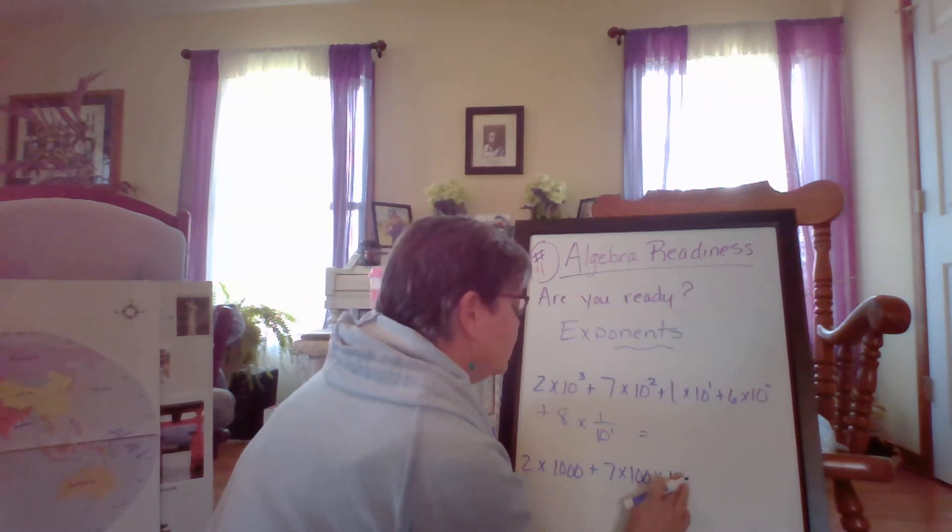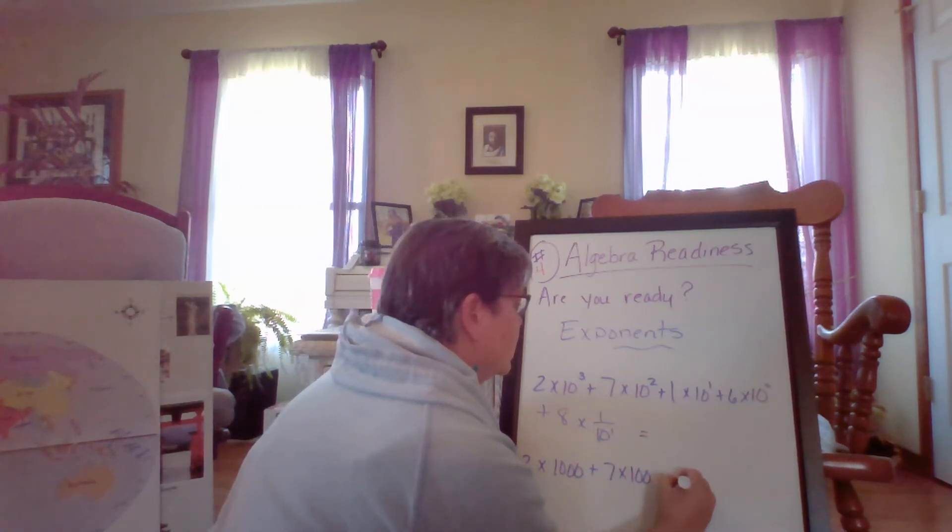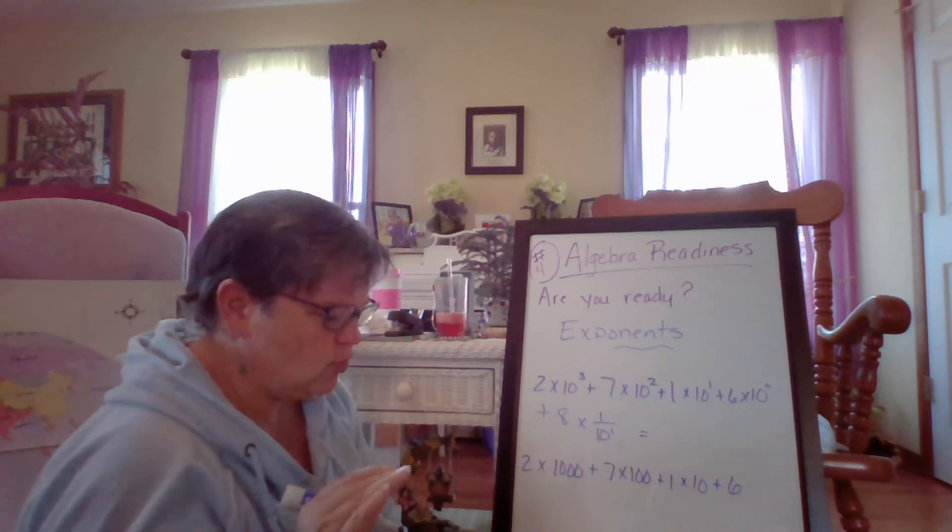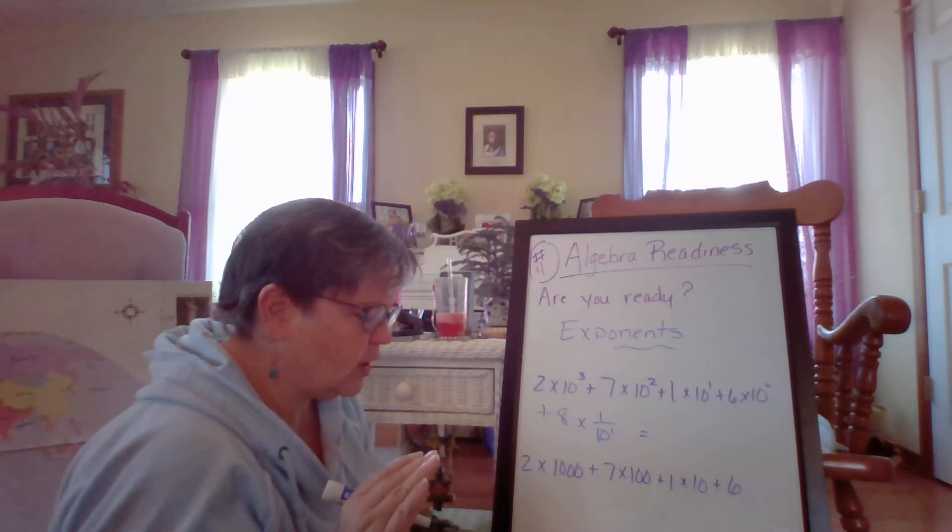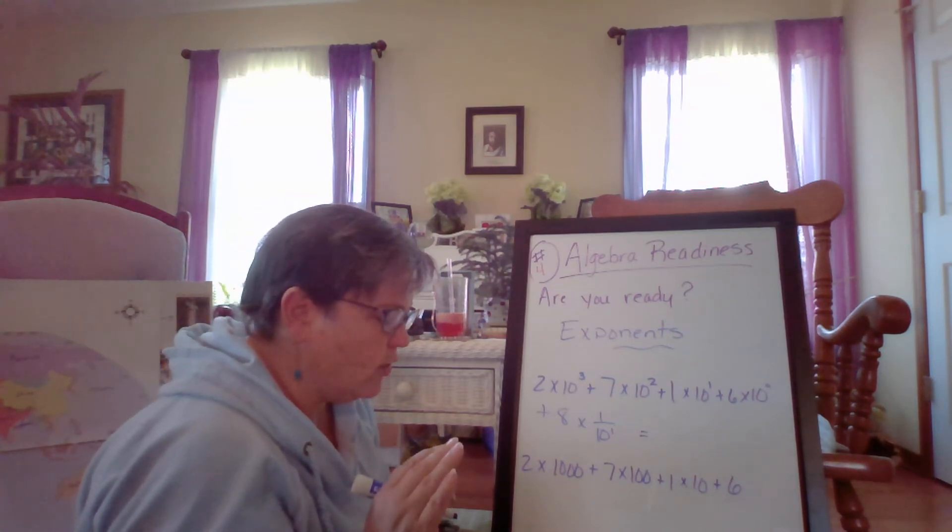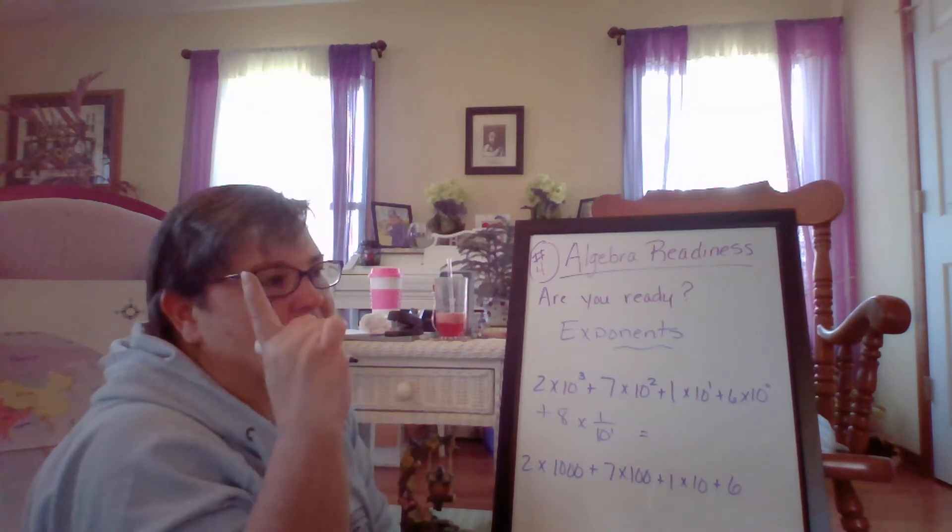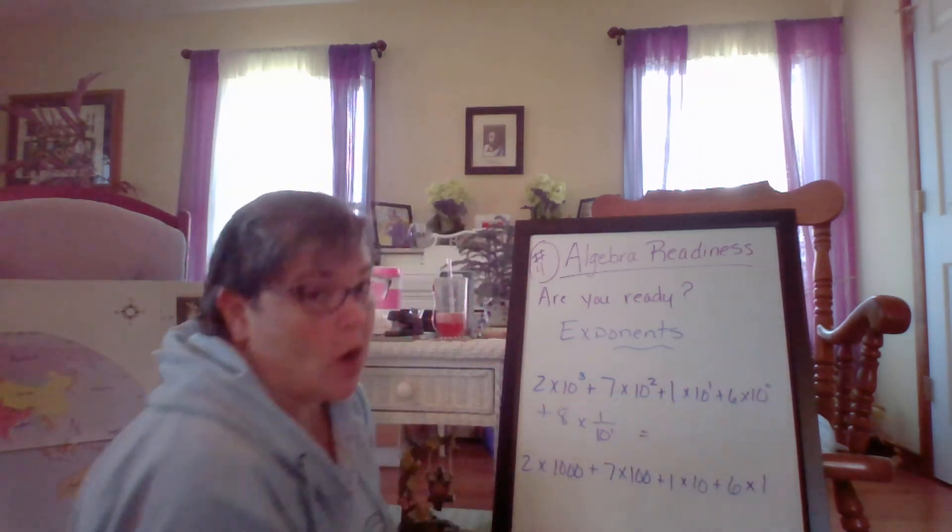Plus six times ten to the zero. You're like, what is that? Well, anytime you have zero as an exponent, the answer is one. So this is six times one.